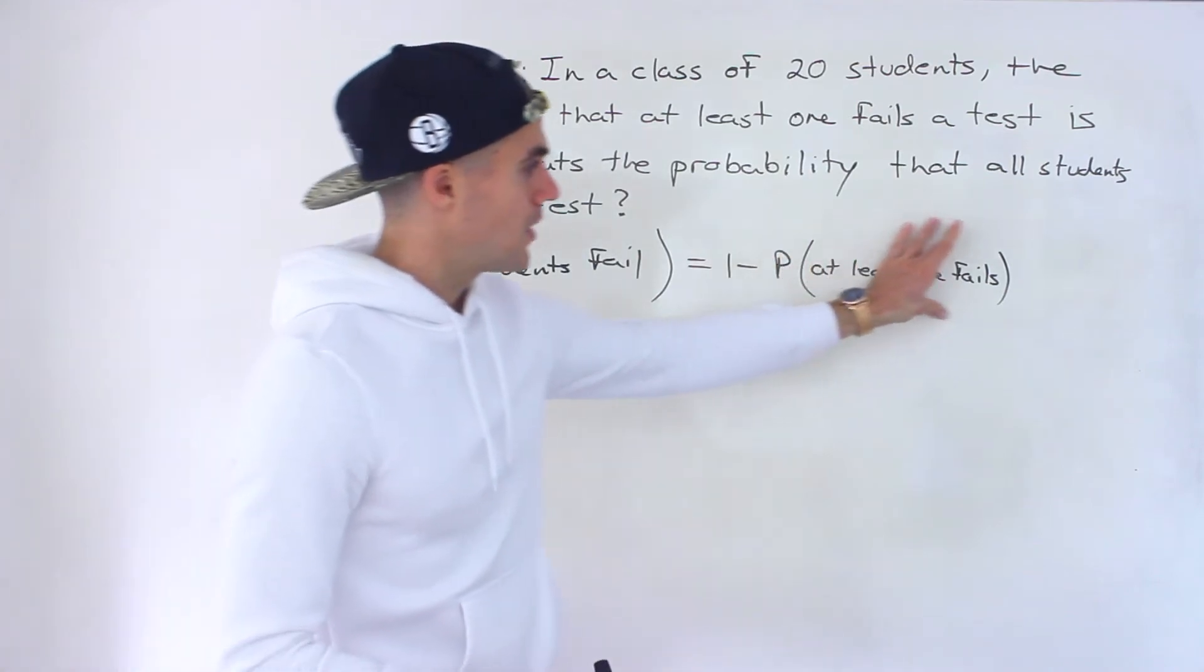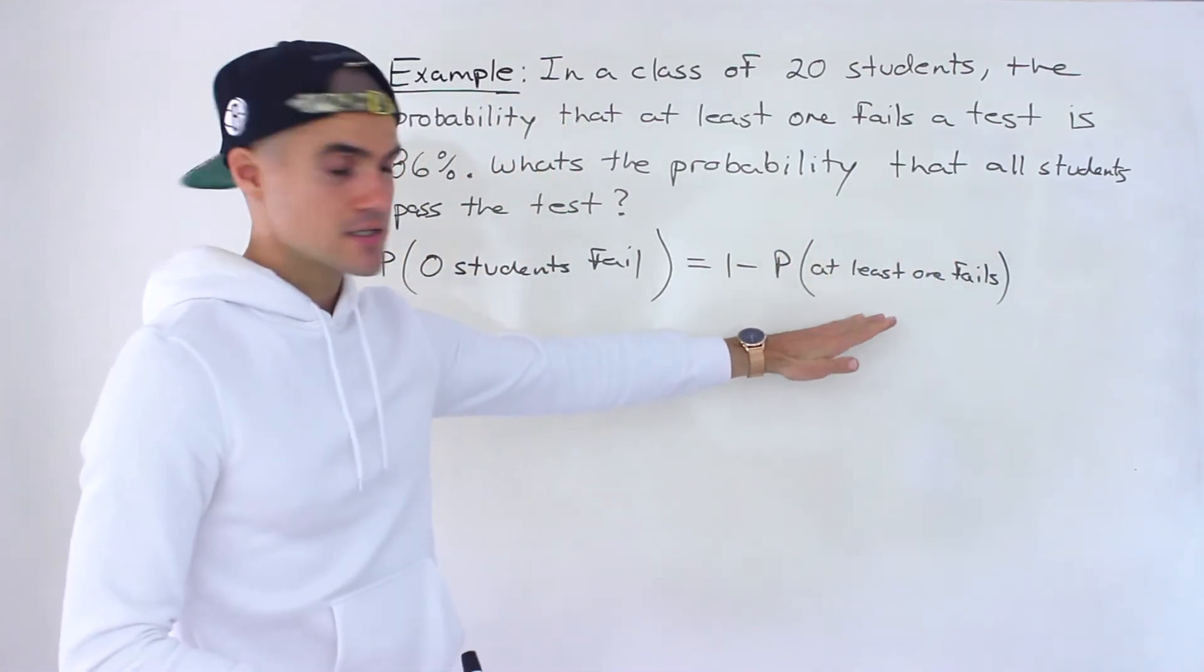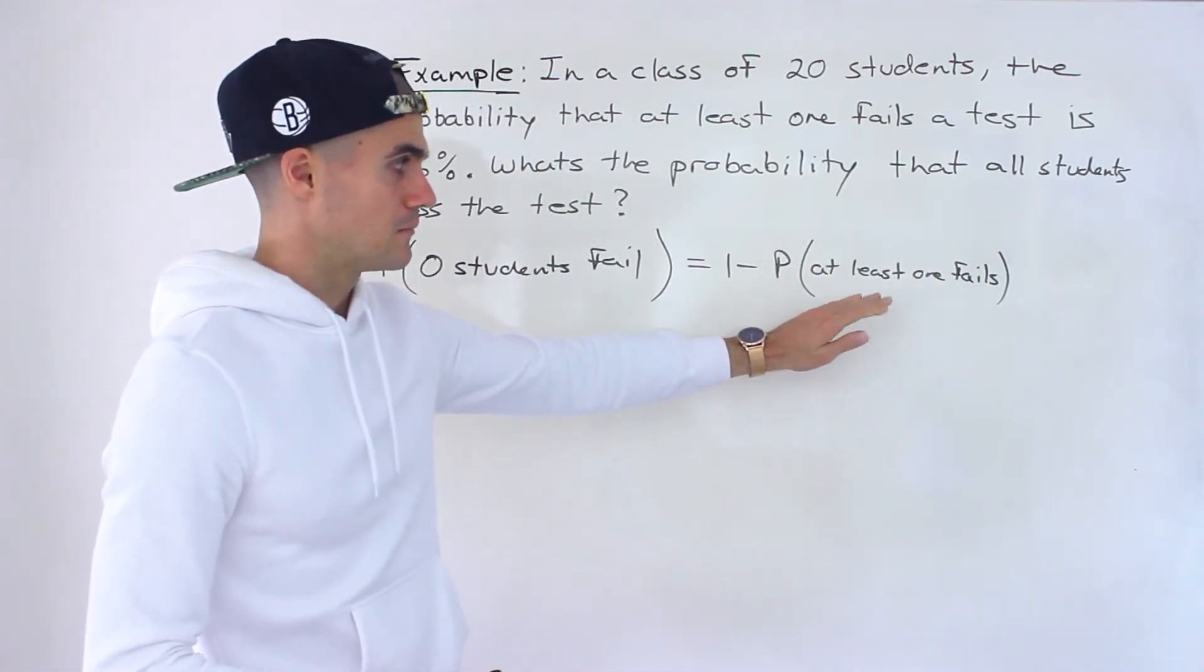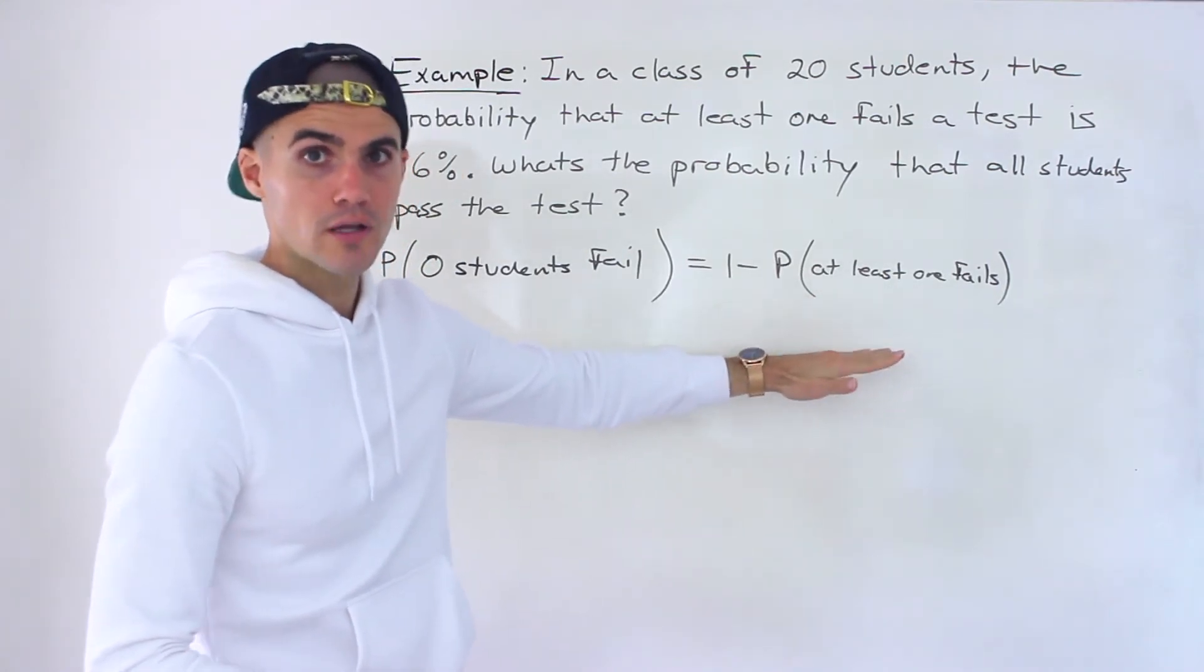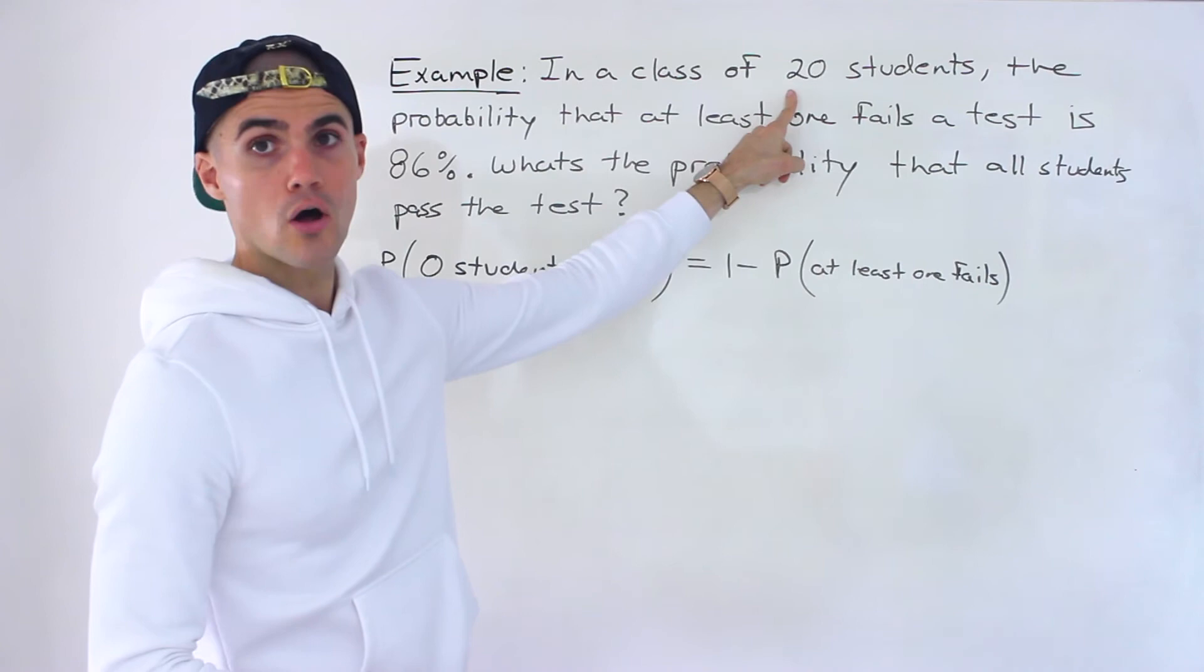Because here this probability has a bunch of different scenarios. So either one student could fail, two, three, four, all the way to all students failing.